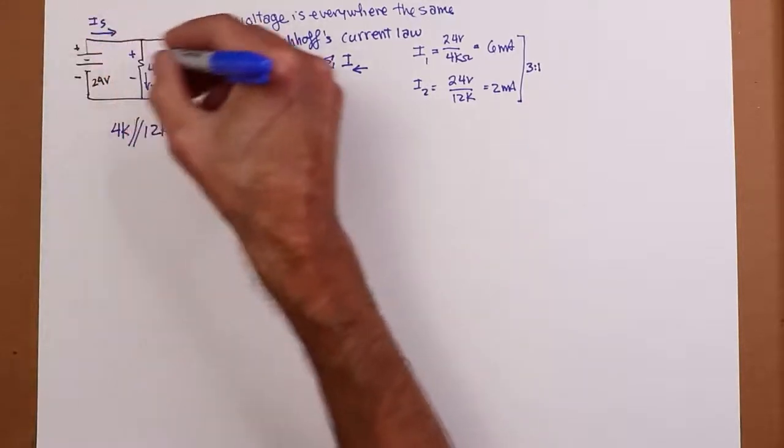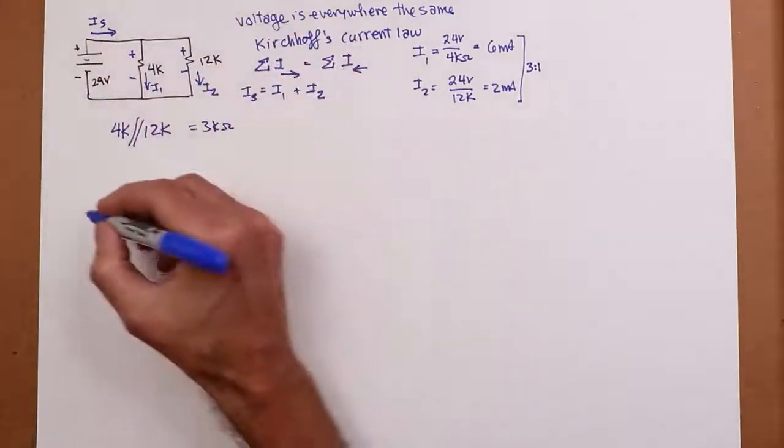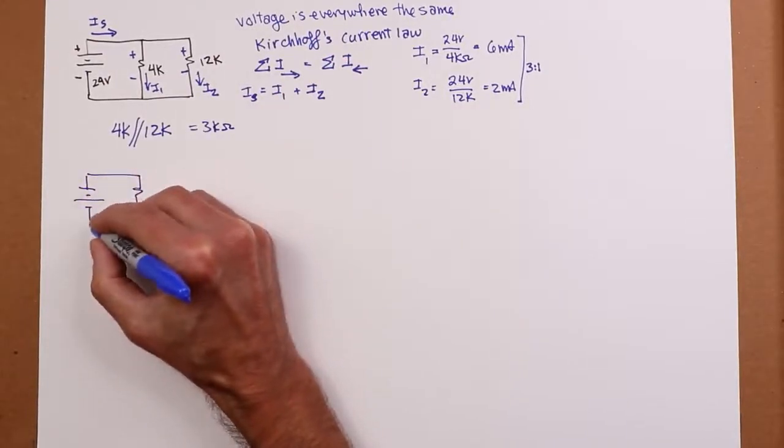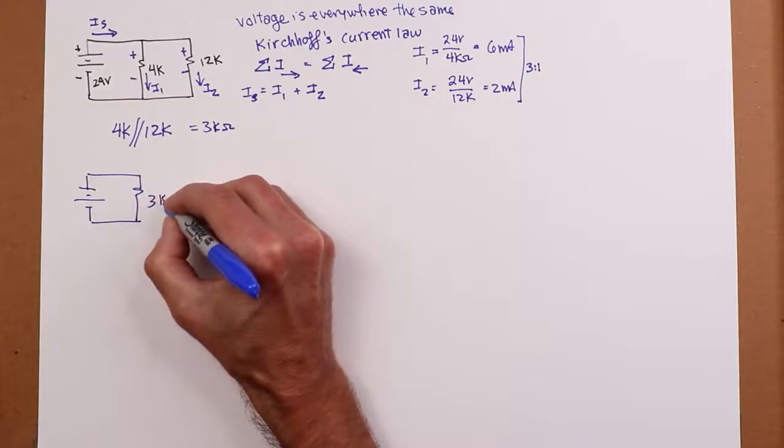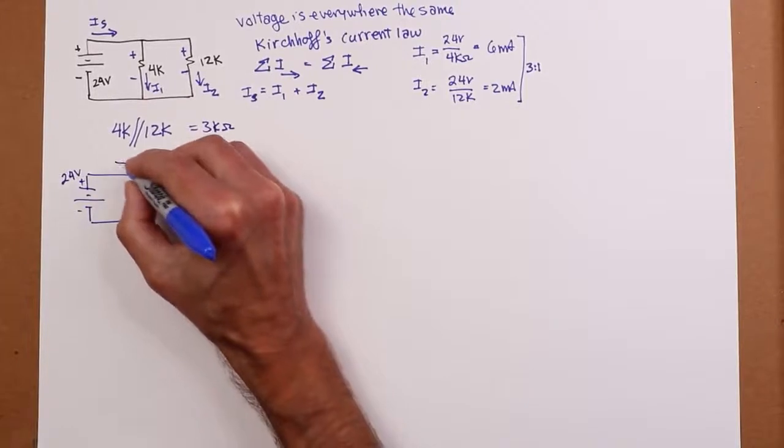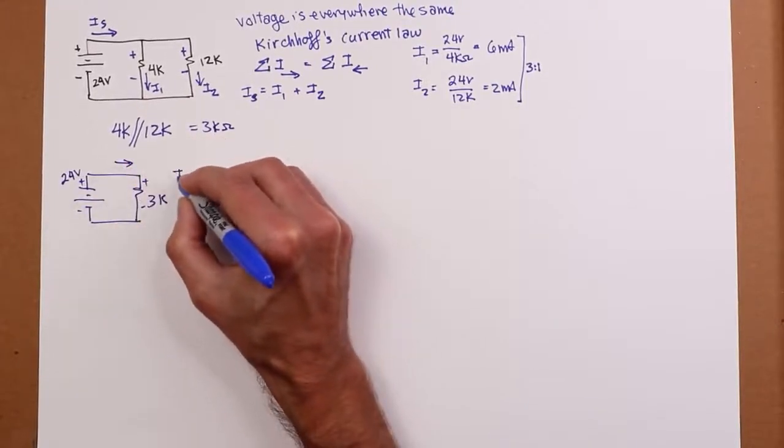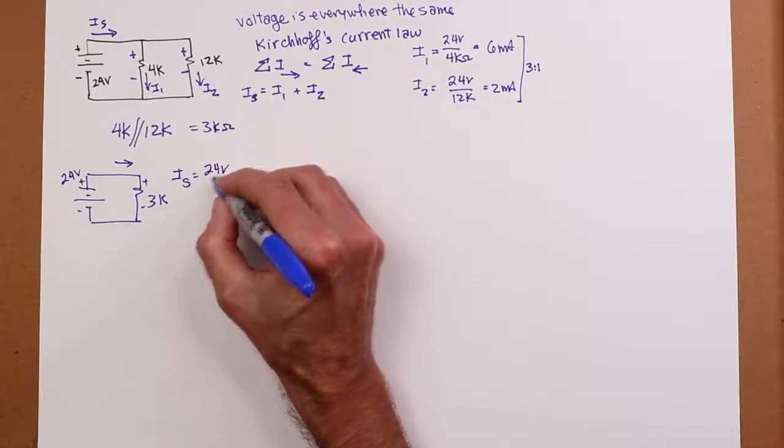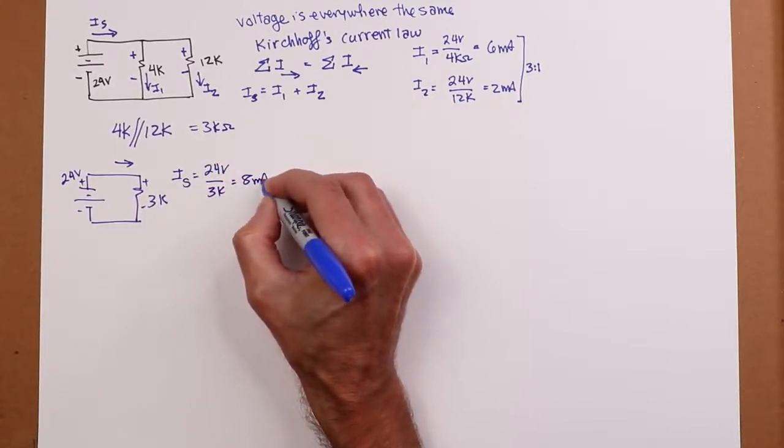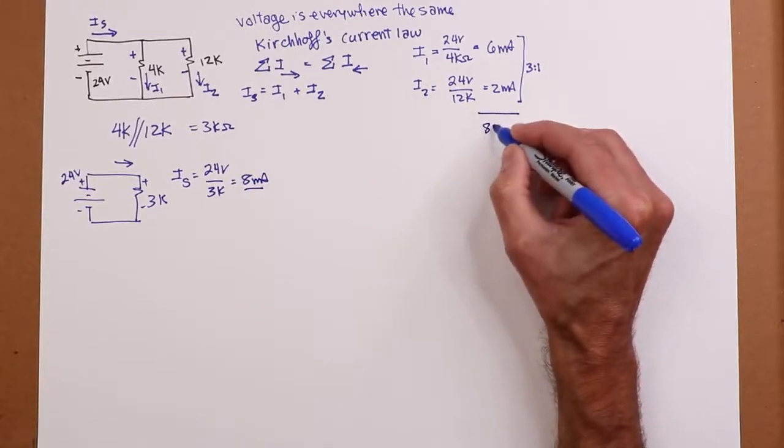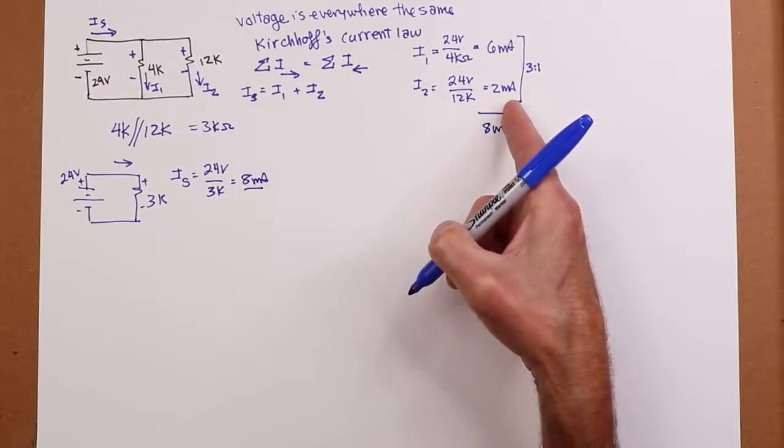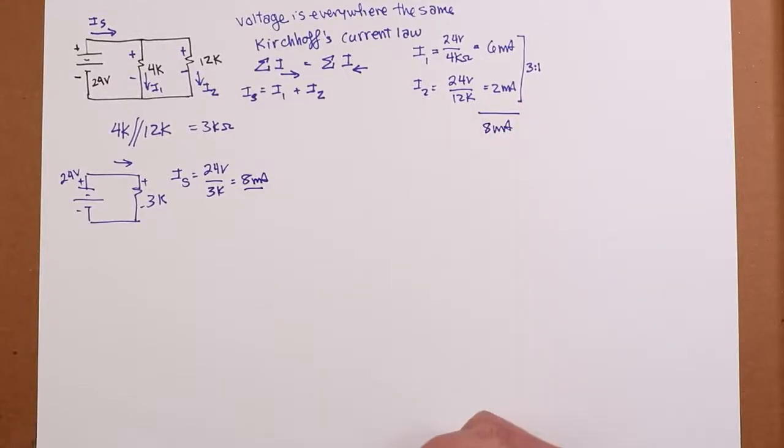So Ohm's law would say if this whole thing is equivalent to a 3k, in other words, if the equivalent circuit looks like this, then this current would have to be, that's our Is, would have to be 24 volts over 3k, or 8 mils, which when we add these up, is 8 mils. What goes in must equal what comes out.